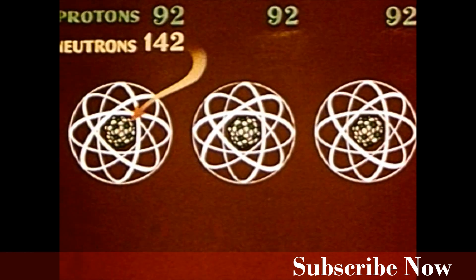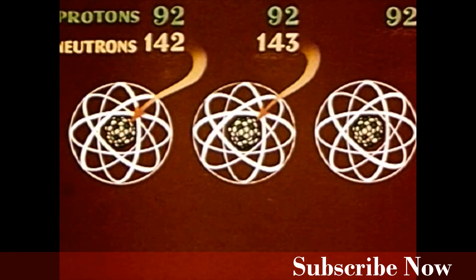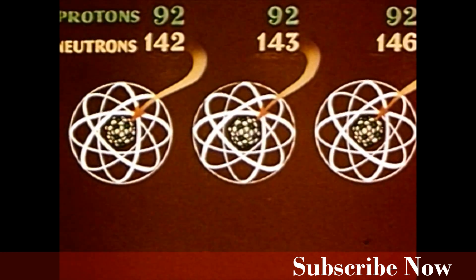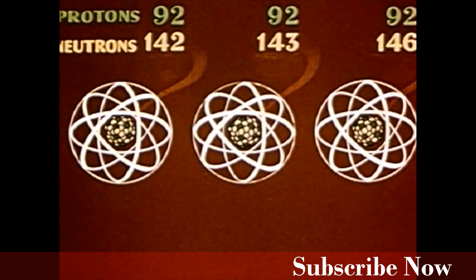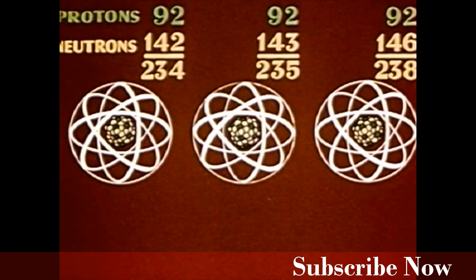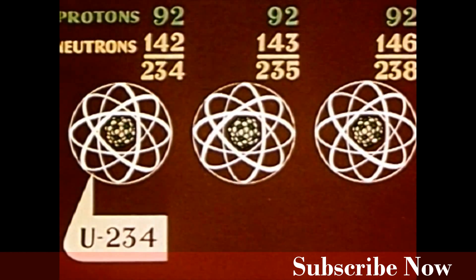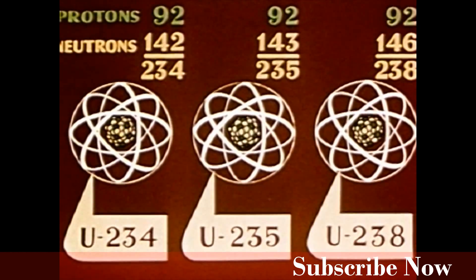Natural uranium may contain 142, 143, or 146 neutrons. That means uranium has three natural isotopes: U-234, U-235, and U-238.